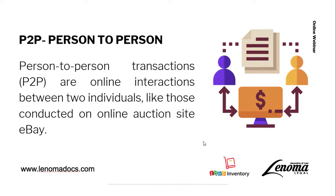Thirdly, there are P2P — person-to-person — type of online transactions. These are transactions that usually take place between two individuals but are facilitated through some form of online platform, like eBay or any marketplace which connects different individuals who are trying to sell something. For example, if you're trying to sell a car in your personal capacity, you plug it into a platform to get access to more users.